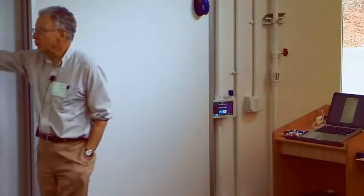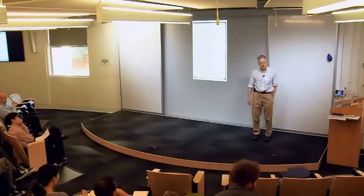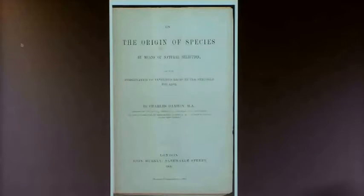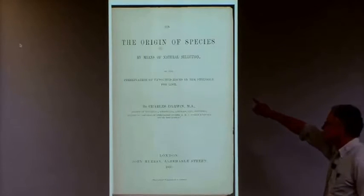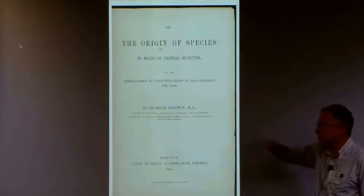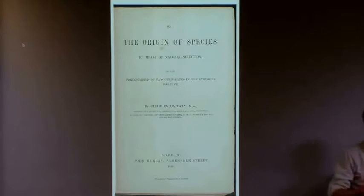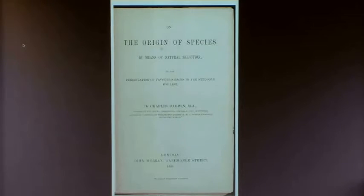Any proper discussion of evolution begins with this book, The Origin of Species by Charles Darwin, published in 1859. The main reason I put this title page is to make sure you know what the title is. It is On the Origin of Species — not, as many people mistakenly think, about the evolution of humans. It's about evolution.